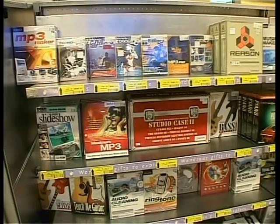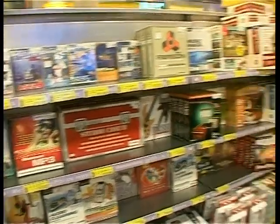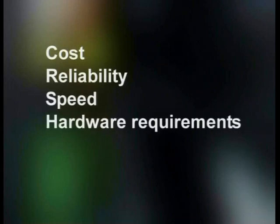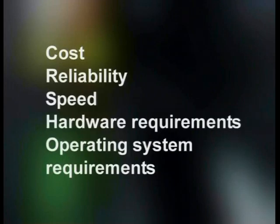Software that you buy from a company like Incredible Connection is called off-the-shelf software because you literally take the package off the shelf and pay for it. It's generally cheaper and quicker to buy off-the-shelf software because it is commercially available. Because off-the-shelf software is not written especially for any single user, the buyer must carefully evaluate the software's abilities, including its cost, reliability, speed, and hardware and operating system requirements.